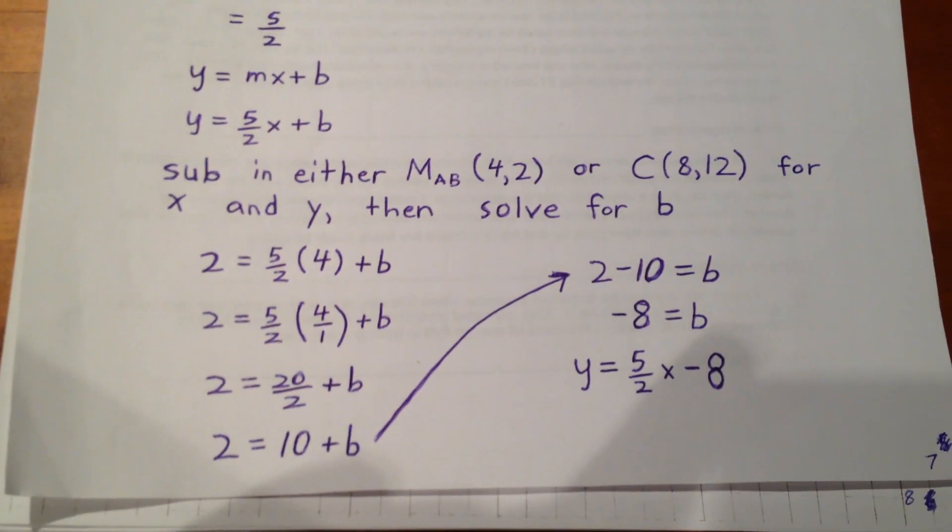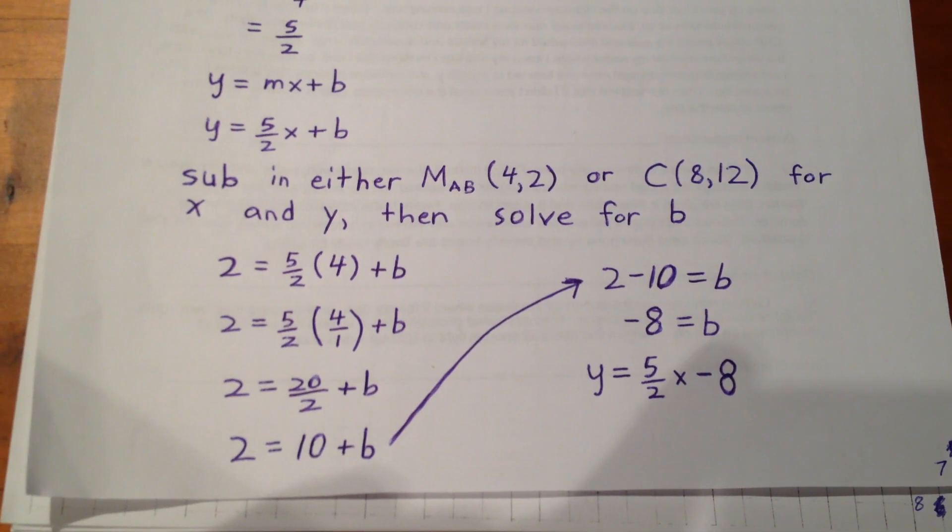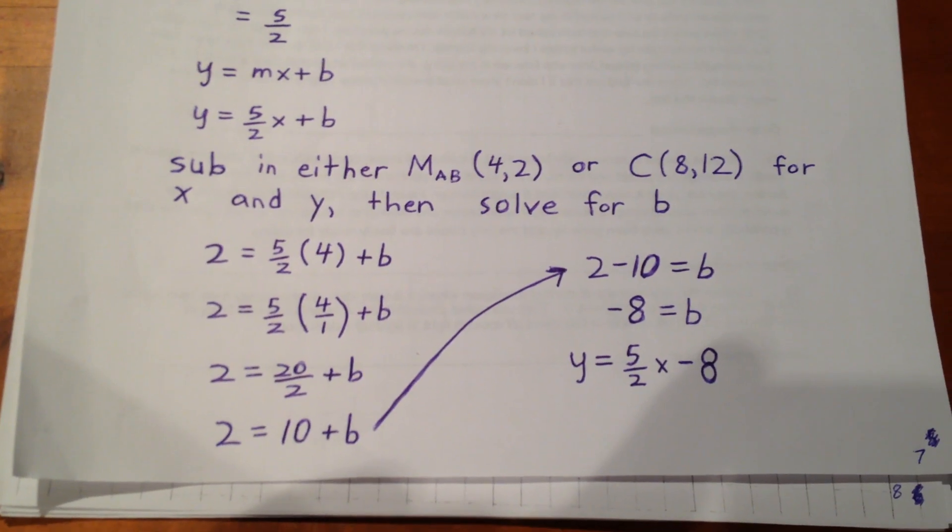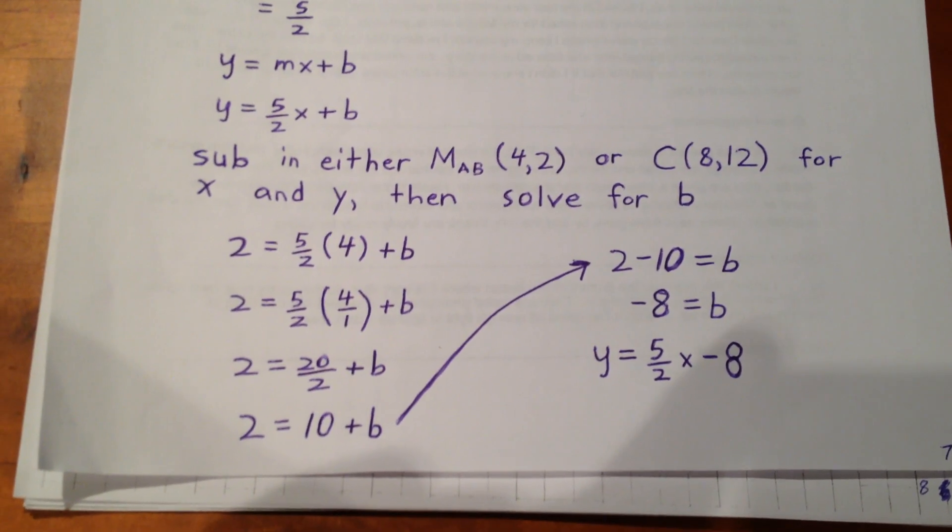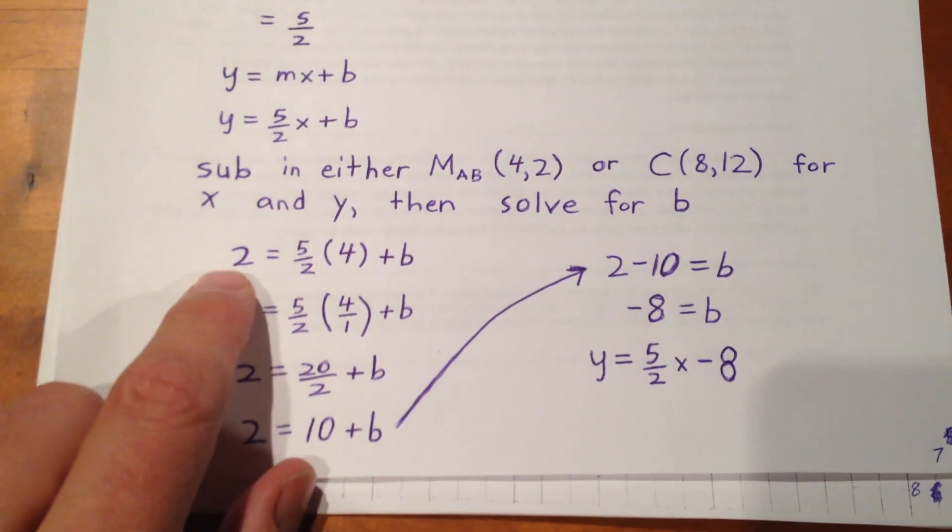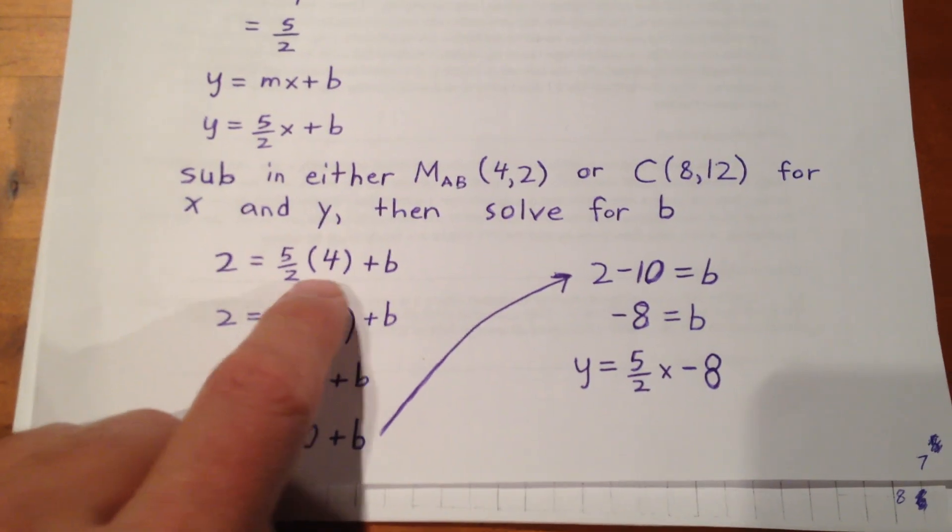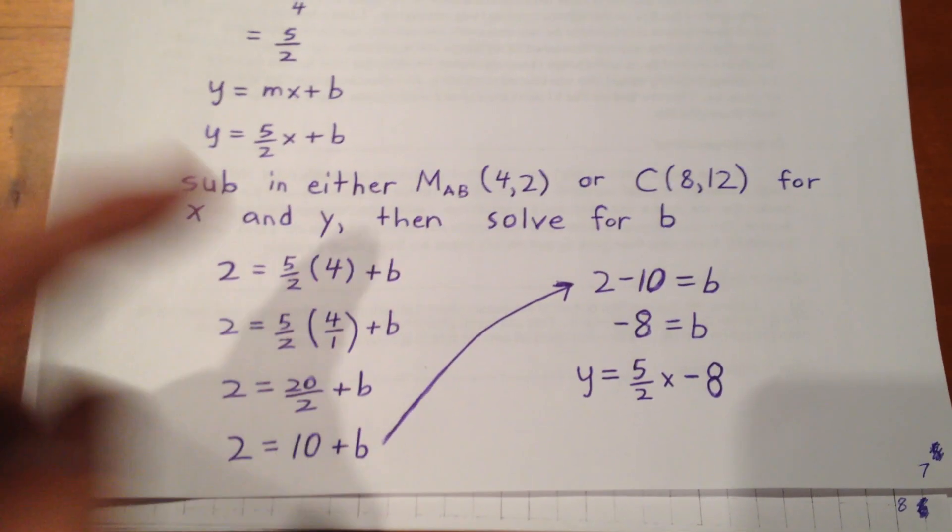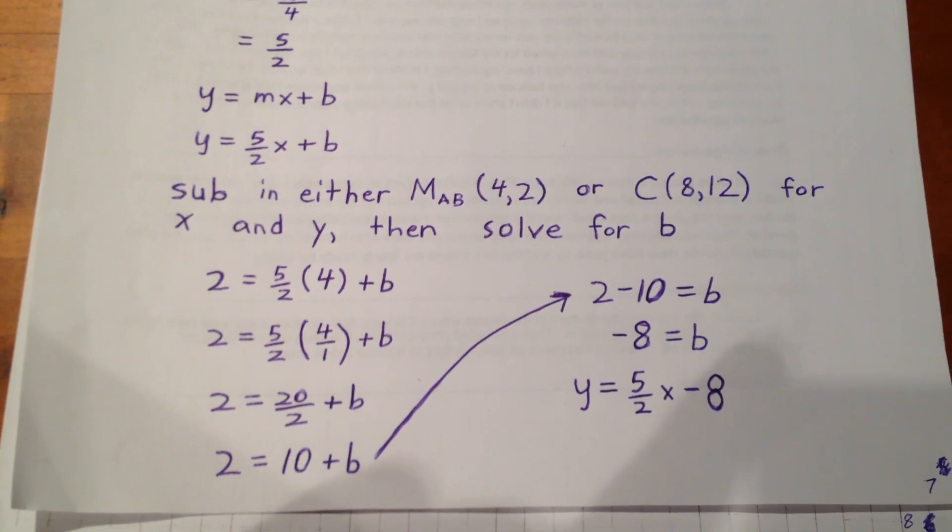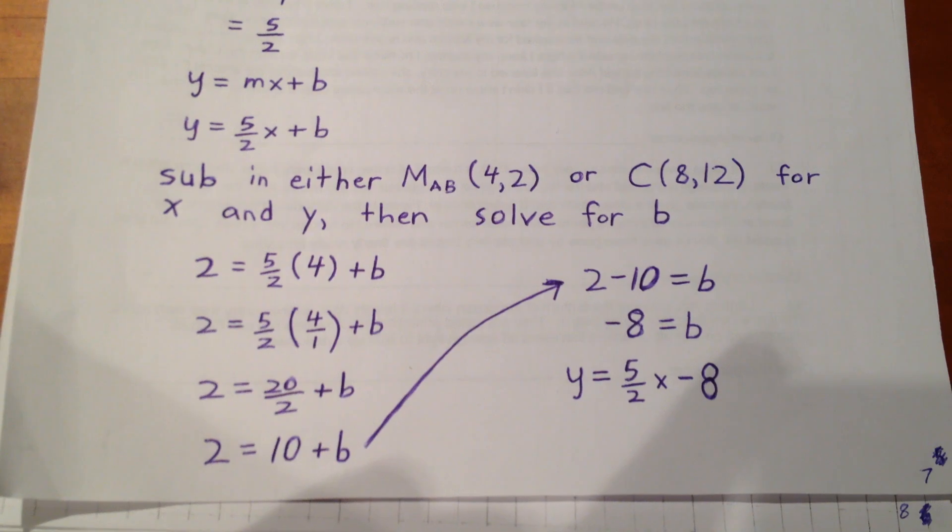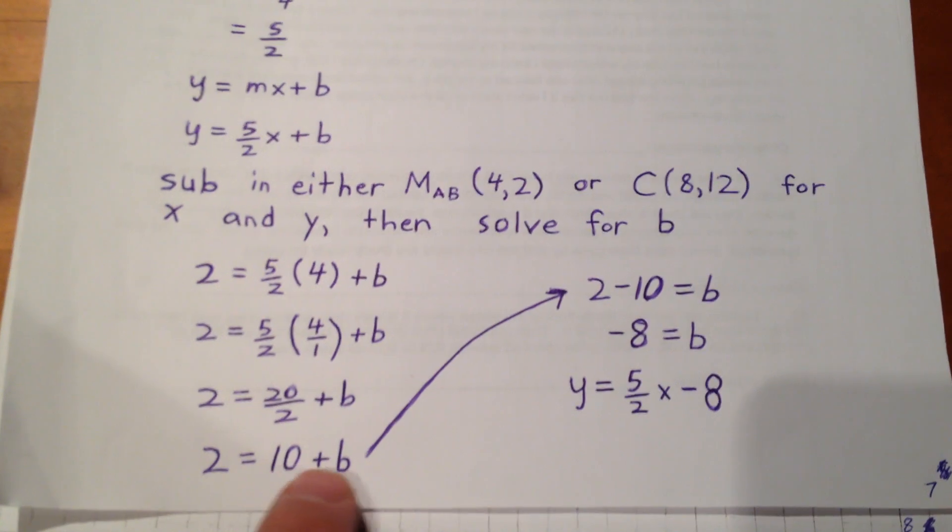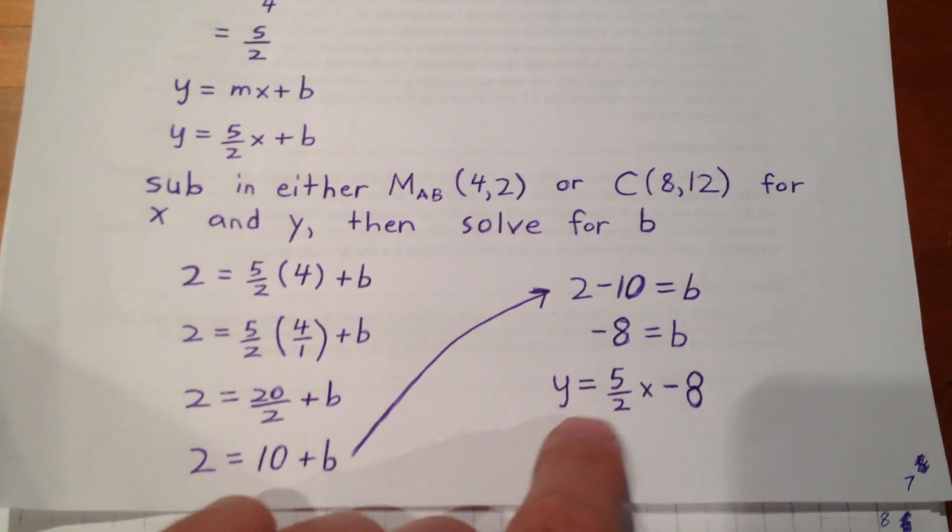At this point, we sub in either of the two known points, 4, 2, or 8, 12, for x and y, and then we solve for b. So, we chose in this case to sub in the coordinates 4 and 2. So, 2 goes in for y, 4 goes in for x. We know from above that our slope is 5 halves. And now, we can simply evaluate b. 5 halves times 4 over 1 is 20 over 2, which simplifies to 10. So, we get 2 is equal to 10 plus b, which means b is negative 8.